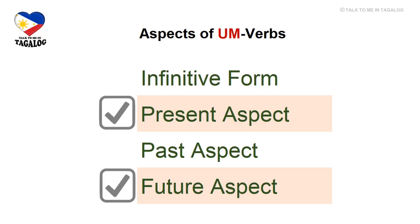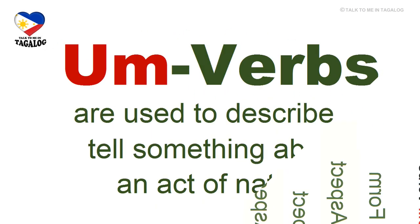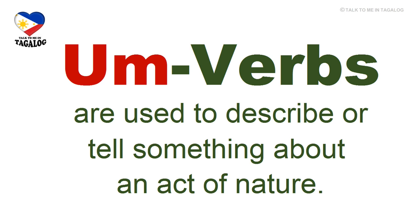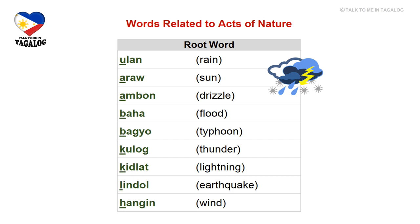In this video, you will learn how to form the present and future aspects of um-verbs. But before we proceed, let me tell you that um-verbs are also used to describe acts of nature, or what we call acts of God. We will study nine words related to acts of nature in this lesson. Try to memorize the root words and pay attention to the first letter of each word, which I underlined, because our rules for forming the present and future aspects depend on them.